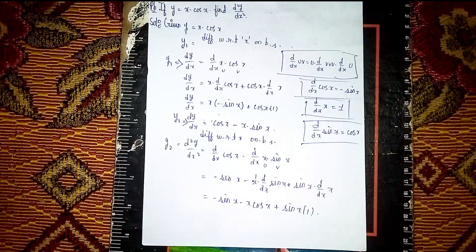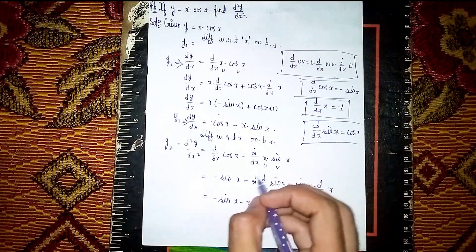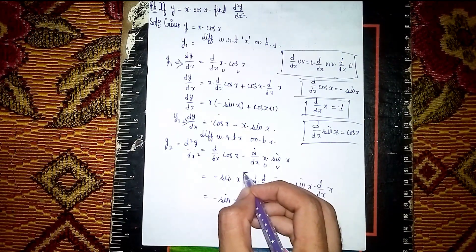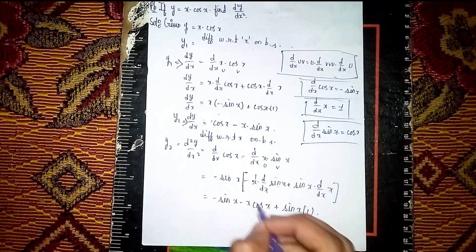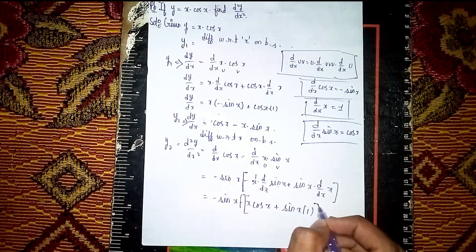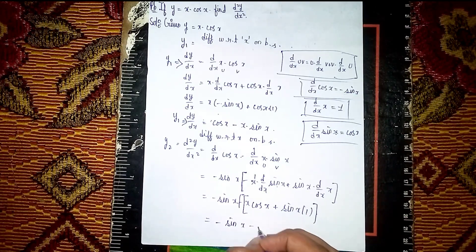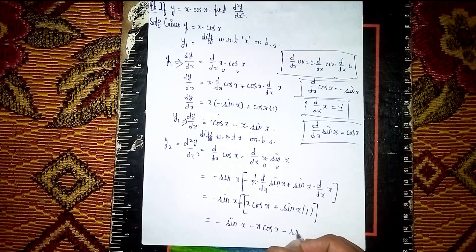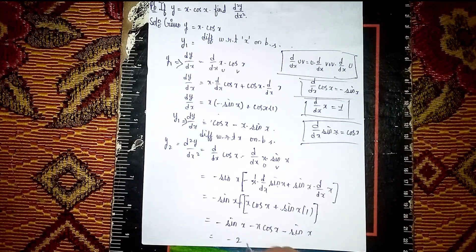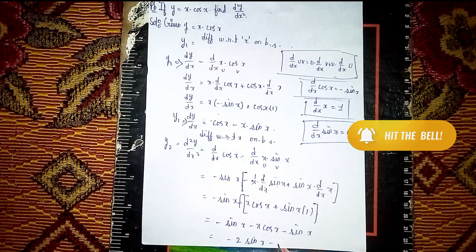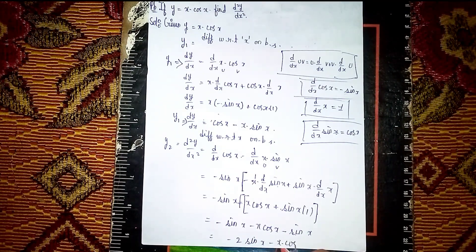Now take the minus sign as a bracket, multiplying with both terms. So it becomes: minus sin x, then minus into x·cos x gives minus x·cos x, and minus into sin x gives minus sin x. Combining: minus sin x minus sin x gives minus 2 sin x, minus x·cos x. This is our final answer. Thanks for watching.